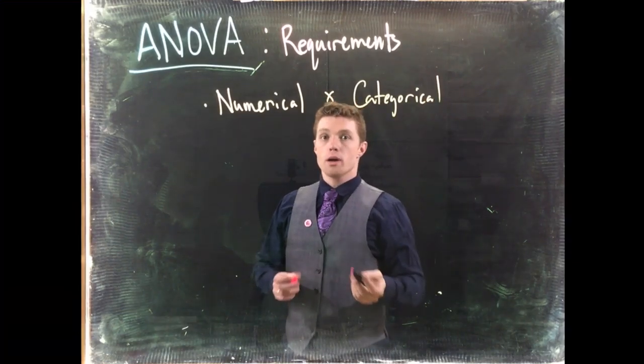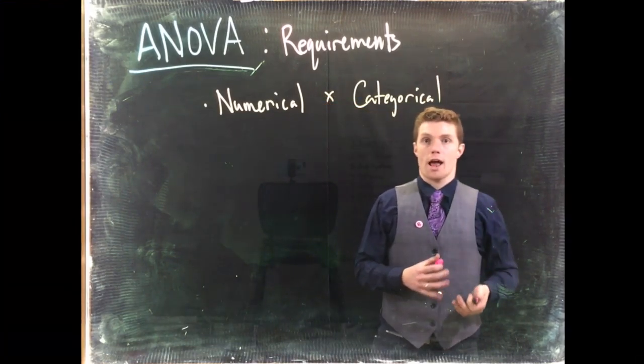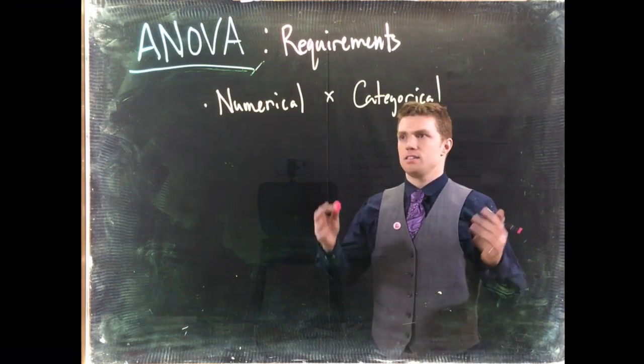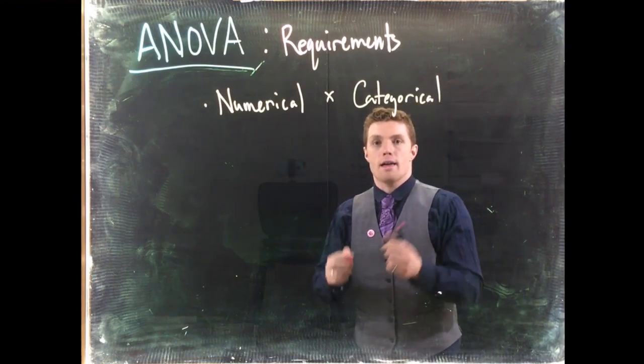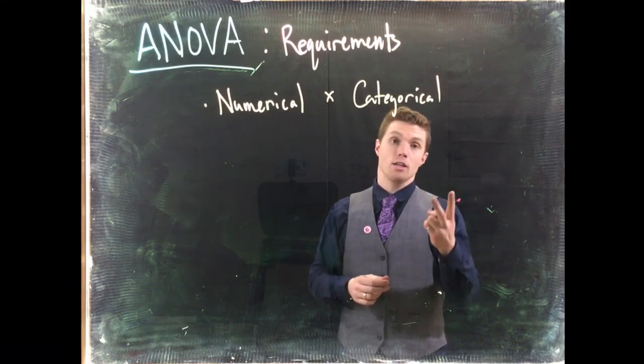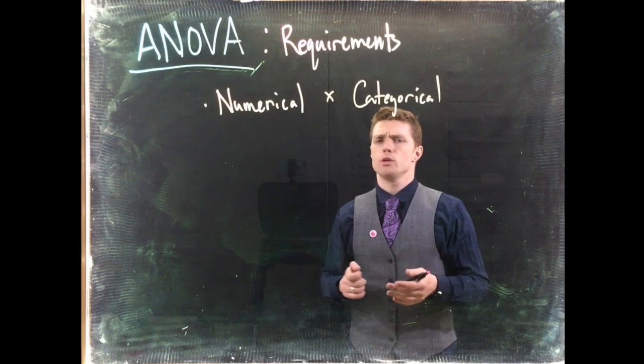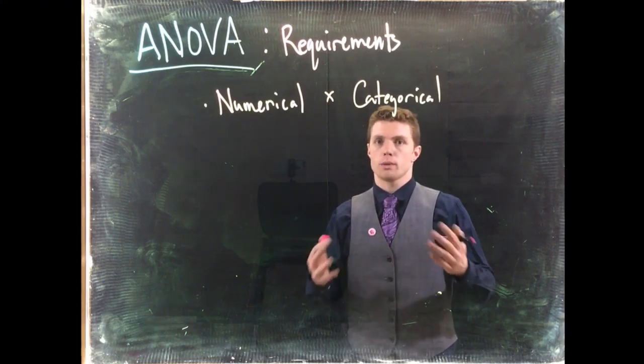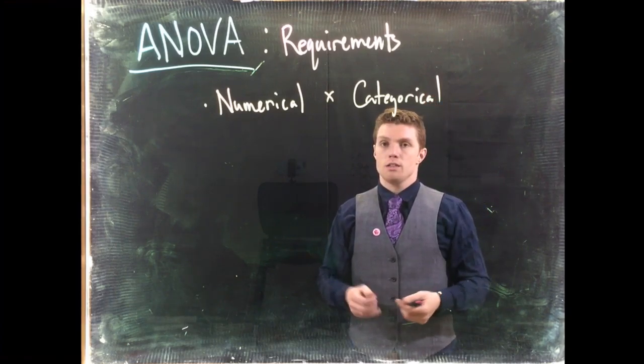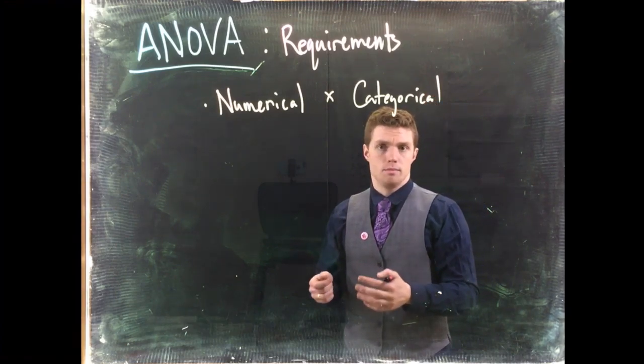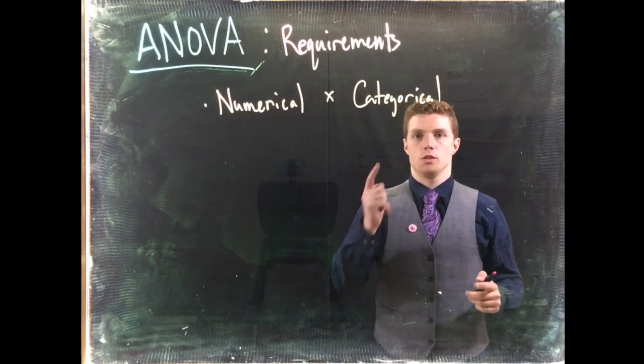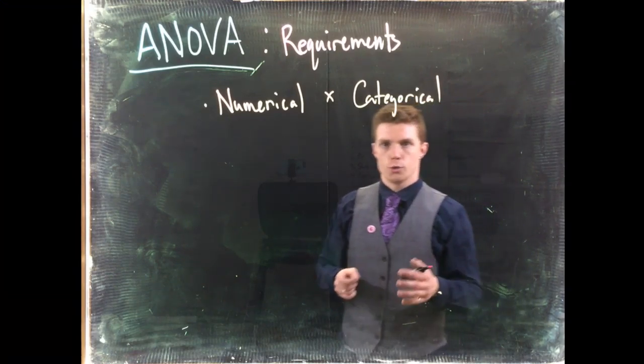So the numerical data is what we're actually interested in. We're actually interested in some true mean weight, height, distance, something. And we're going to compare multiple groups to one another. We can do as few as two, but most of the time when we use ANOVA, we're doing like three or four or more groups. And that's our categorical variable. So we need some numerical data that we're actually interested in, and we're going to compare multiple groups and use the categorical variable to group the data together.